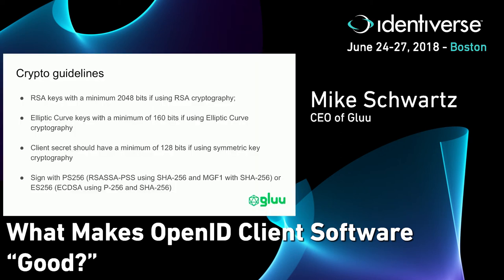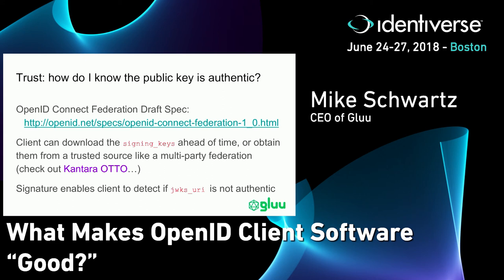These are crypto guidelines mostly from the Open Banking Group — some basic minimums. You don't want to use the wrong key size. These are best practices about algorithms to use if you're using encryption or signing. With quantum computing on the horizon, this is a moving target, but as of right now this is reasonable guidance.